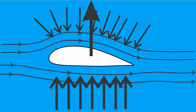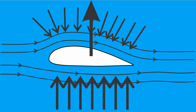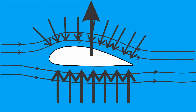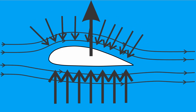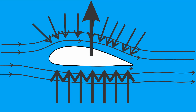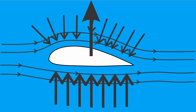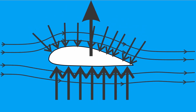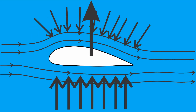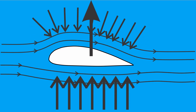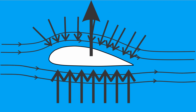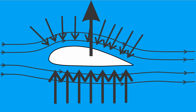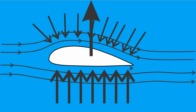Using this in Bernoulli's equation, we get that the static pressure under the wing is greater than the pressure above. This difference in pressures results in a force that lifts the plane into the air.